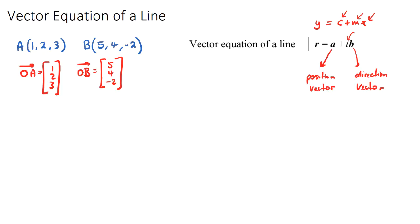And then we need a direction vector. And to find the direction vector of a line, it's just going to be the vector from A to B. Because if we think about what A and B are in space,